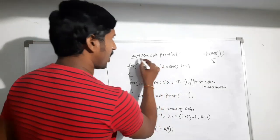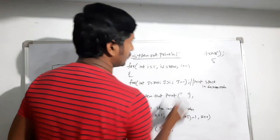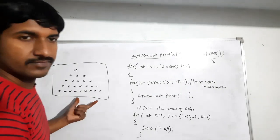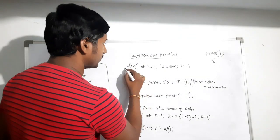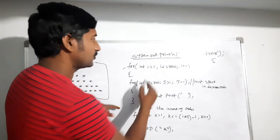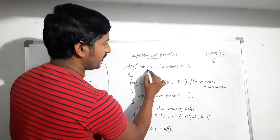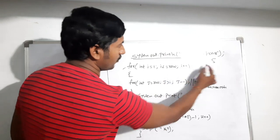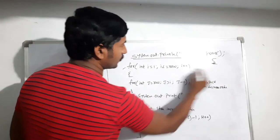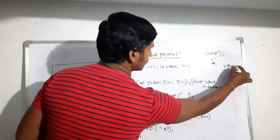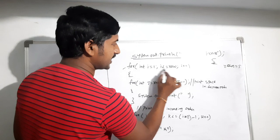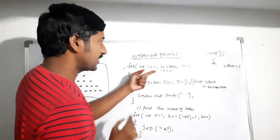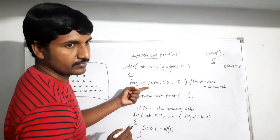First, we write a statement to enter the number of rows to print the star pattern. I am giving five rows. Next, we take one for loop: int i equal to one, initializing i to one. Then i less than or equal to rows — rows holds the value five. When i equals one, one less than or equal to five, condition is true, so it goes to the inner for loop.